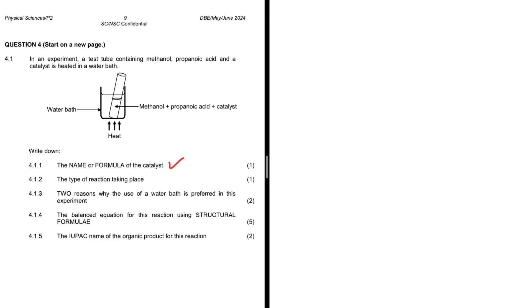The question asks for the name or formula of the catalyst used. Let's take a look at what is happening. In an experiment, a test tube containing methanol, propanoic acid, and a catalyst is heated in a warm bath. We have the setup in front of us: the warm bath, under it we have some heat, methanol, propanoic acid, and a catalyst. You should be able to tell that we have an esterification taking place.